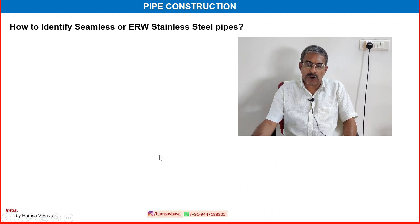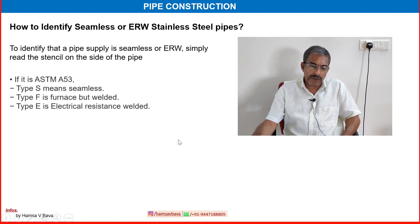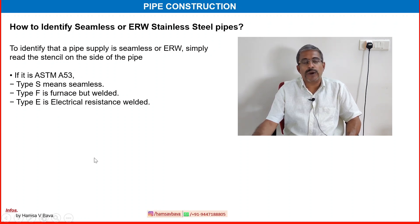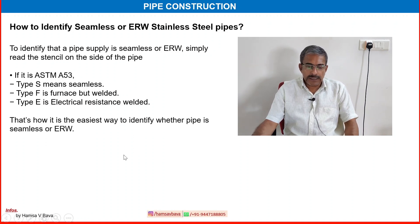How to identify seamless or electric resistance welded stainless steel pipe? Simply read the stencil on the side of the pipe. If it is ASTM A53, type S means seamless, type F means furnace butt welded, and type E means electrical resistance welded. If you get a chance to visit your piping yard or field-installed pipeline area, identify and differentiate what type of construction is used for manufacturing the pipe.